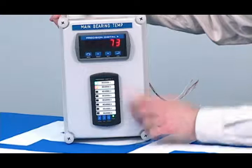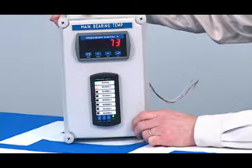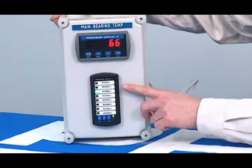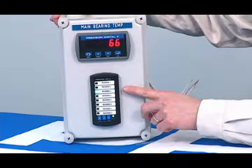When we come back around, it will look at channel two again, and it is below the set point. So the alarm will reset, the red light goes away, and now we're back to the normal operation.